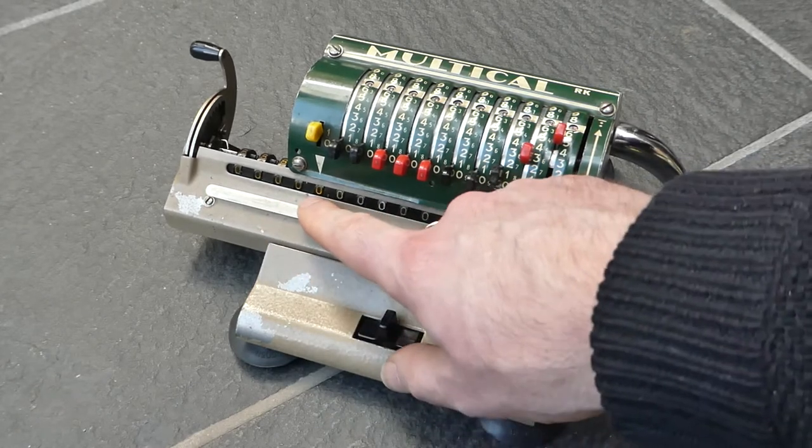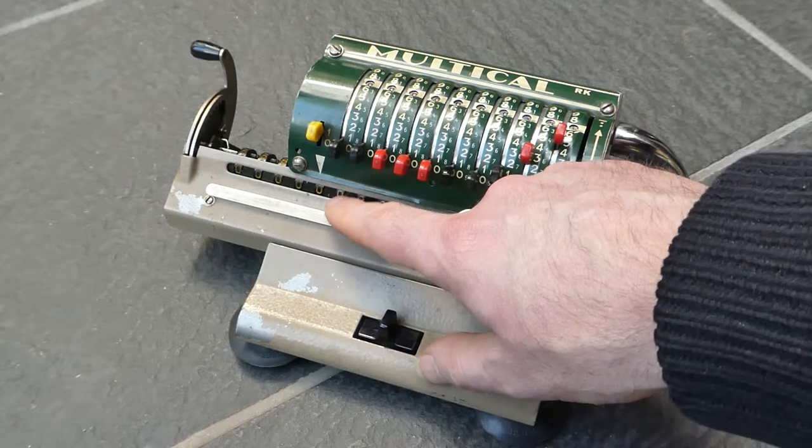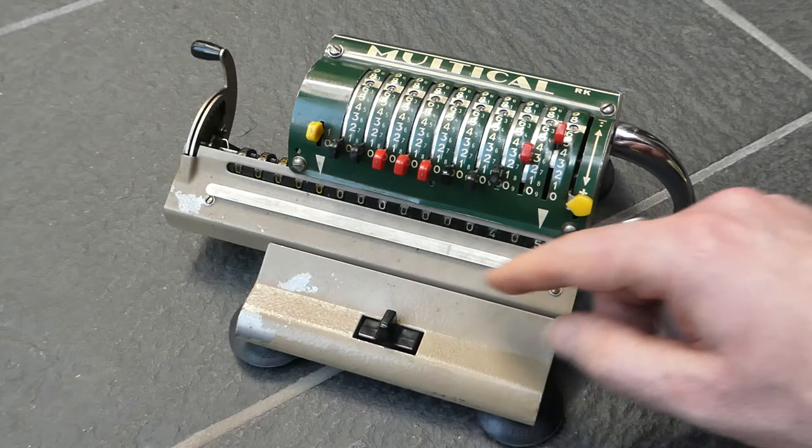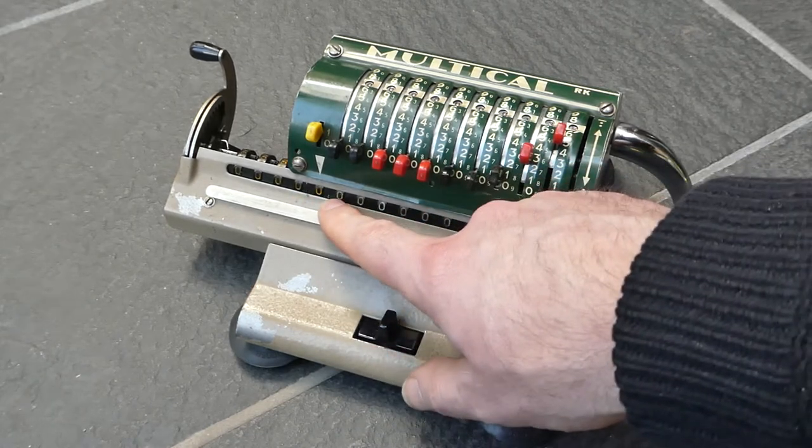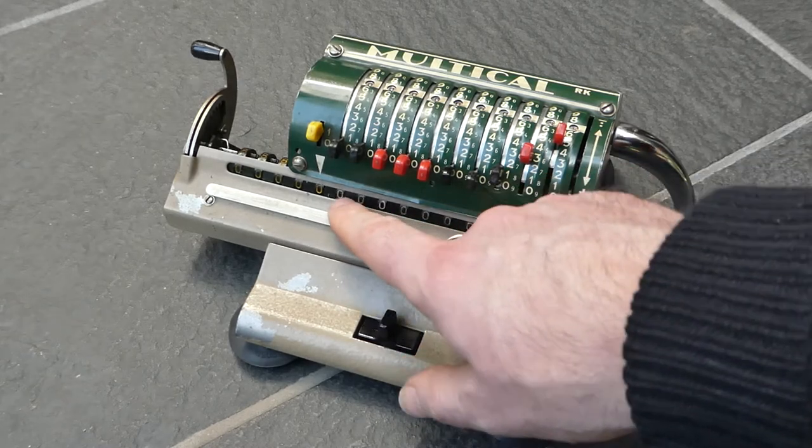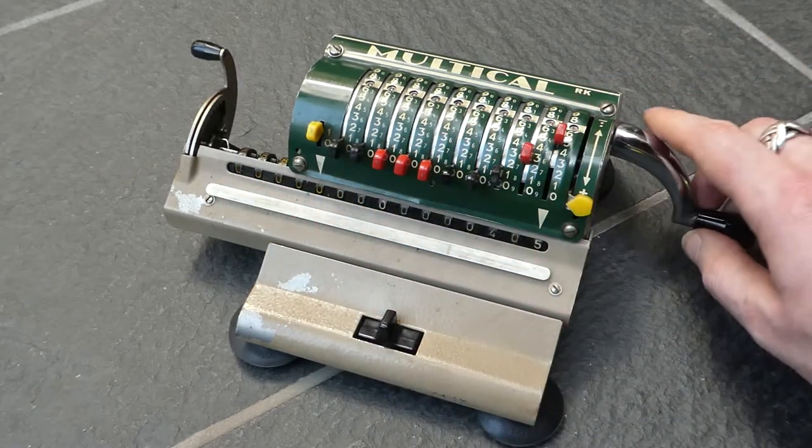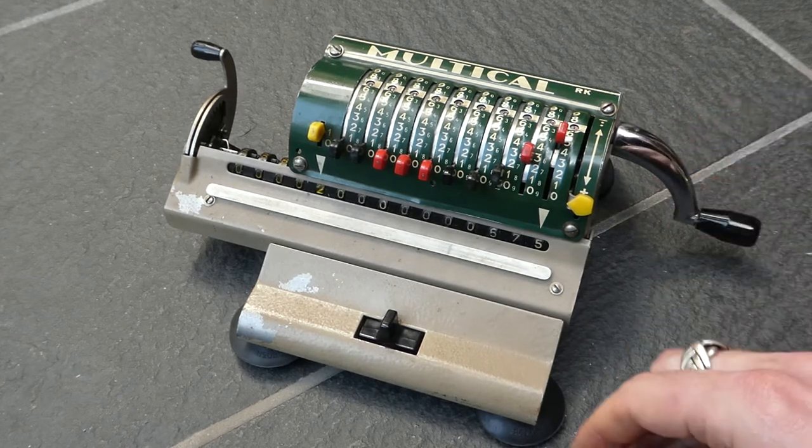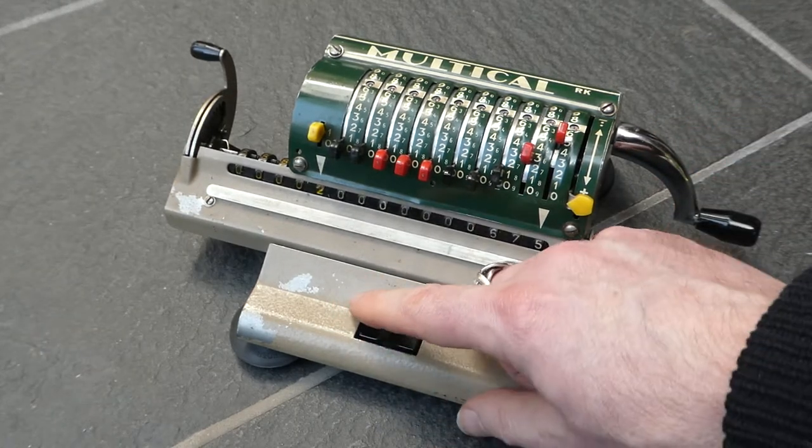You do have to be careful not to cause an overflow from the last digit here into the counter because there is no carry suppression here. It's still essentially one long register, you're just using these digits as a counter. You can move the carriage with this knob here.